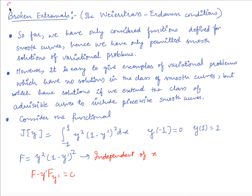Welcome to this 27th lecture on calculus of variation. In the last lectures, what we were doing was choosing our admissible curves. We were choosing y such that y was in the space D1[a,b] — basically we were choosing smooth functions.